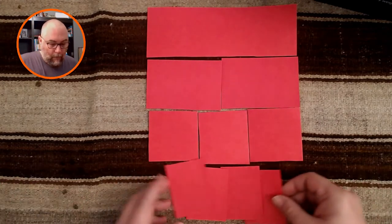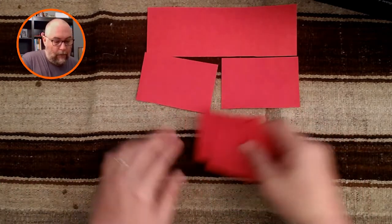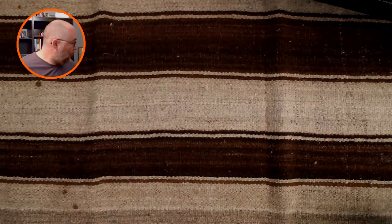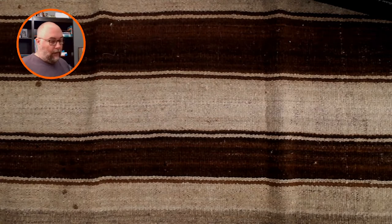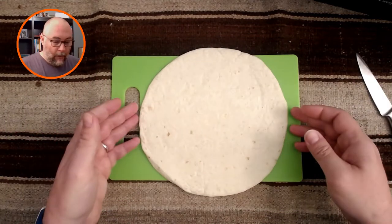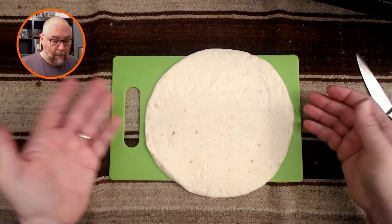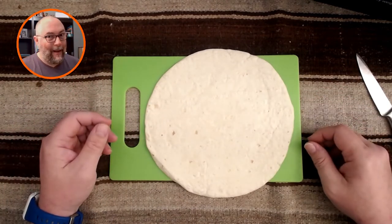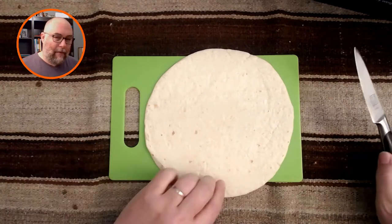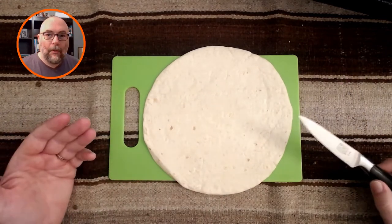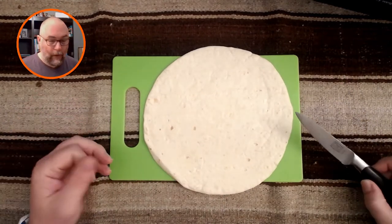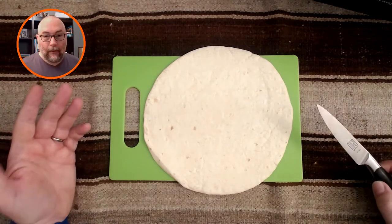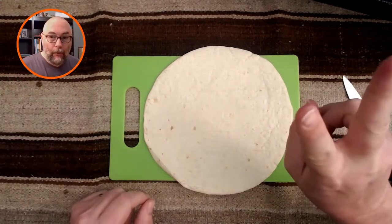So what does that mean when we're talking to our friends and we want to split food up with everybody? Well, for example, you can have anything that's round. I brought you a tortilla. This could be a pizza or it could be a pie.